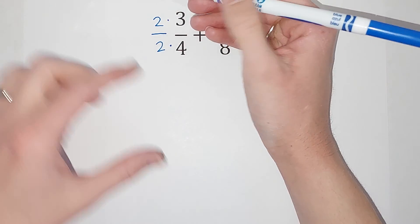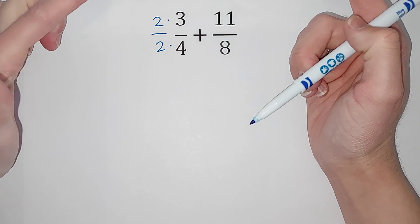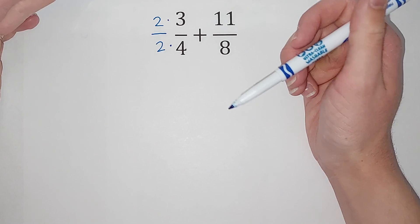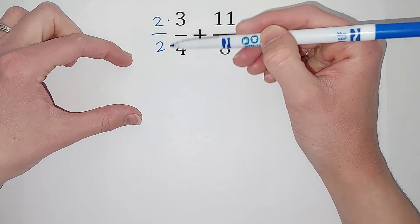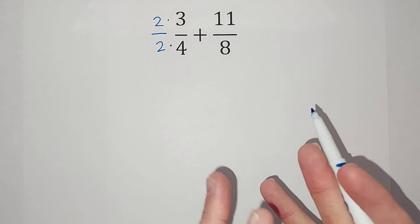And the reason I can do that is because I'm really multiplying by two over two, which simplifies down to one. So I'm really just multiplying by one. It's just a weird looking one. So I'm going to change what the fraction looks like, but not its value.